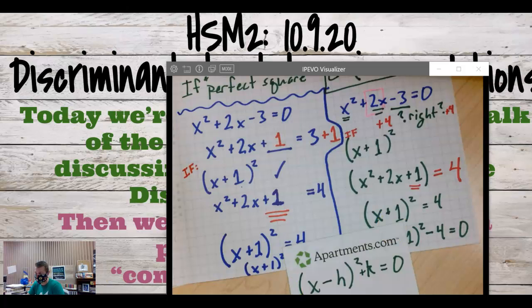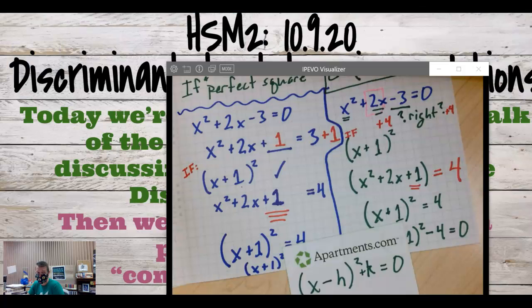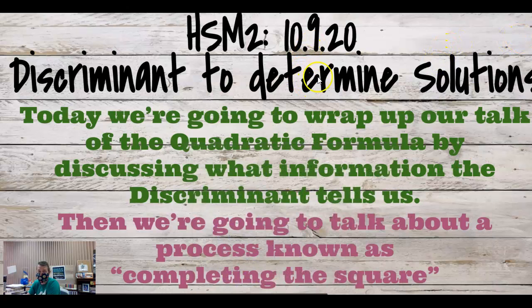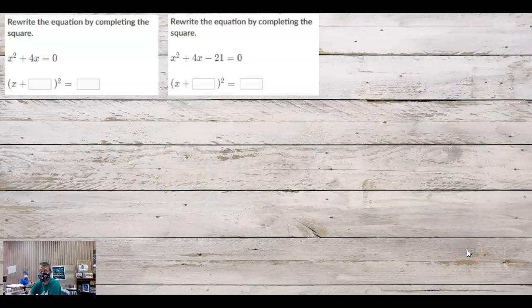Alright, I need to make sure I'm screen sharing. You should see my screen — give me a thumbs up if you do. So like we talked about yesterday, we are talking about discriminants and then completing the square. We're mainly talking about completing the square today. Does anyone have any remaining questions about discriminants? I think most of us did that practice work.